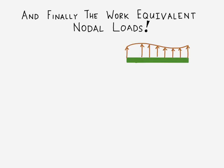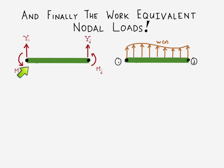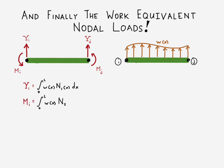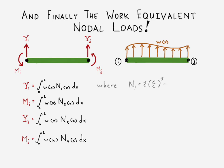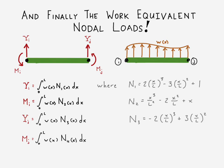There's our arbitrary distributed load and here are our work equivalent loads for our finite element. We can see that our transverse force at the left end can be written in terms of our distributed load and the shape function for the left end. We have something similar for our moment at the left end, our transverse load at the right end, and our moment at the right end. For reference, these are our shape functions one through four: shape function for displacement at node one, rotation at node one, displacement at node two, and rotation at the right end.